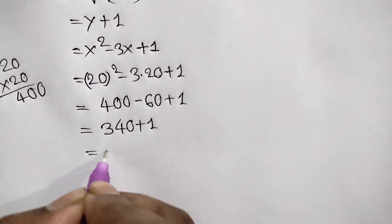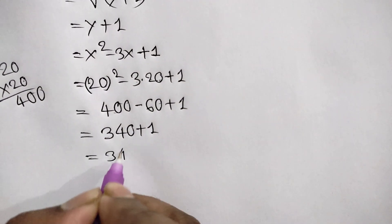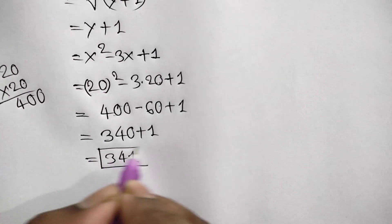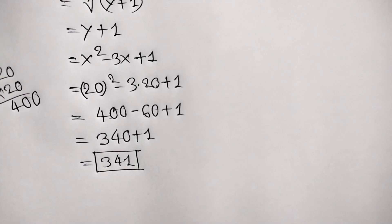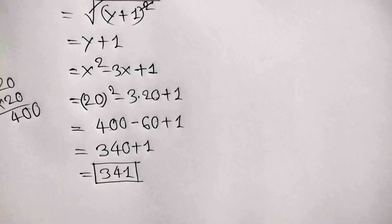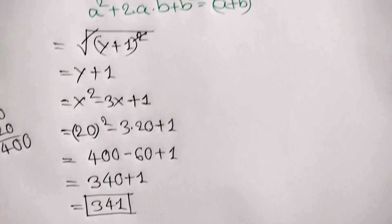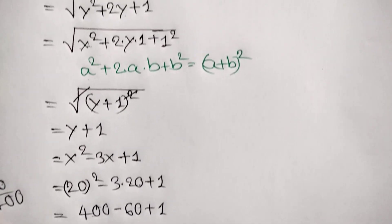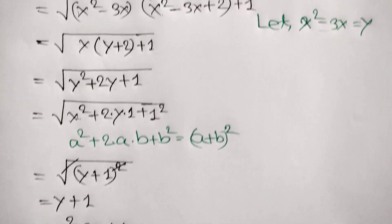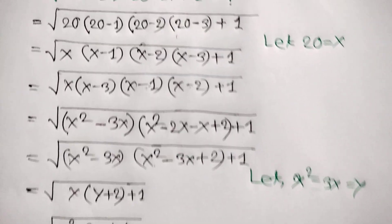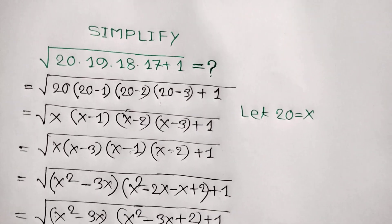400 minus 60 equals 340, plus 1 equals 341, and that is our final answer. Thanks for watching — if you like this video, subscribe to my channel and see you in the next video, bye bye!